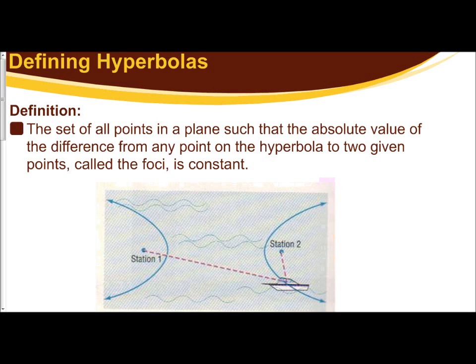In this video series, we will be looking at the last conic section, which is called a hyperbola. A hyperbola is defined as the set of all points such that the absolute value of the difference from any point on the hyperbola to two given points called the foci is constant.